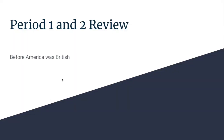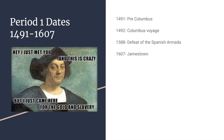For periods one and two, we're really looking at before America was British. Period one is pre-English influence, and period two is the transfer of power from Spanish to English influence in the American colonies. Key dates: 1491 is pre-Columbus, 1492 is Columbus's voyage, 1588 is when the English defeated the Spanish Armada — allowing more English entry into the colonies — and 1607 marks the first permanent settlement at Jamestown.